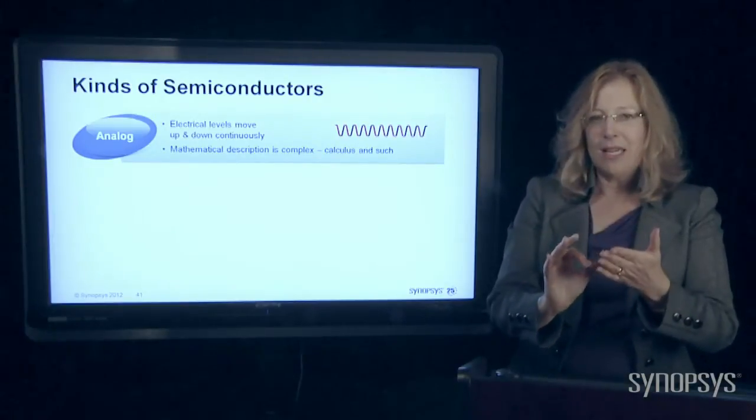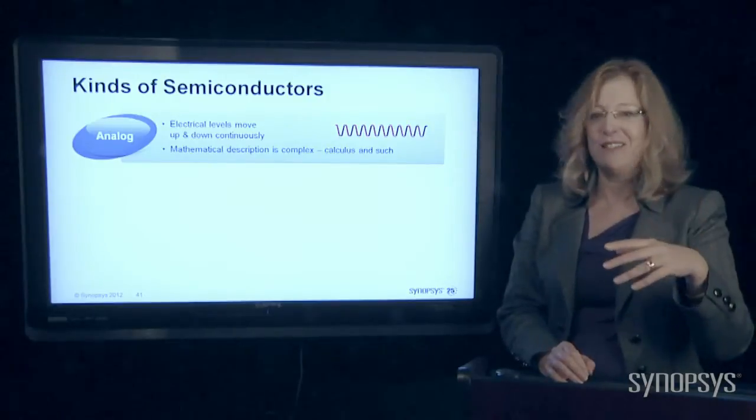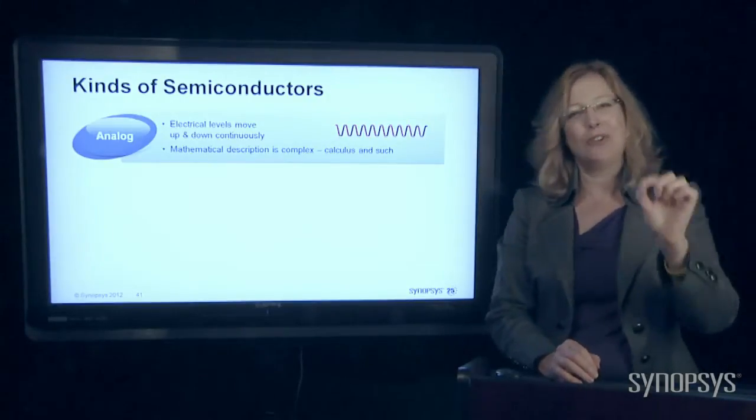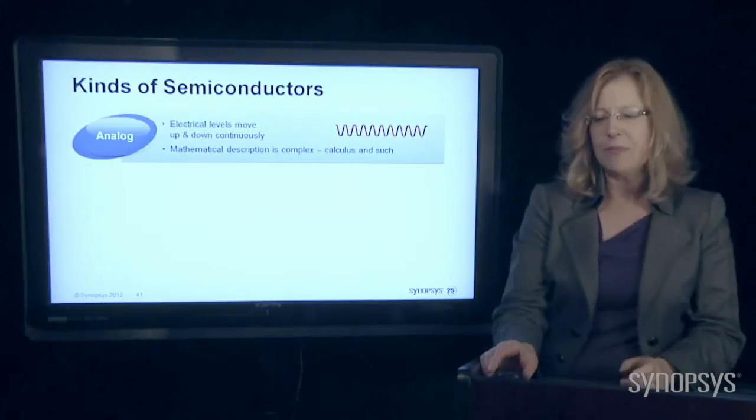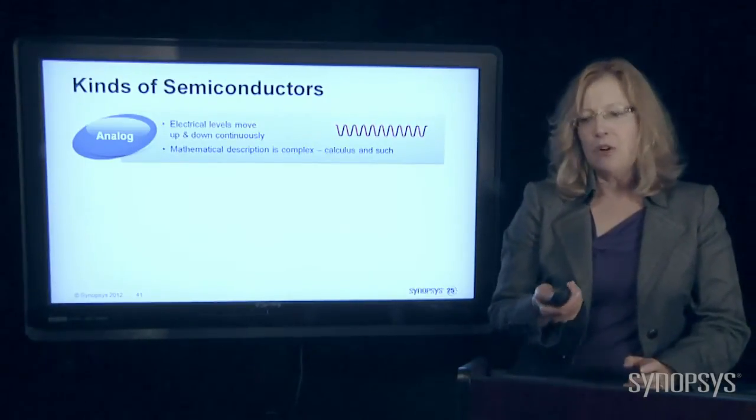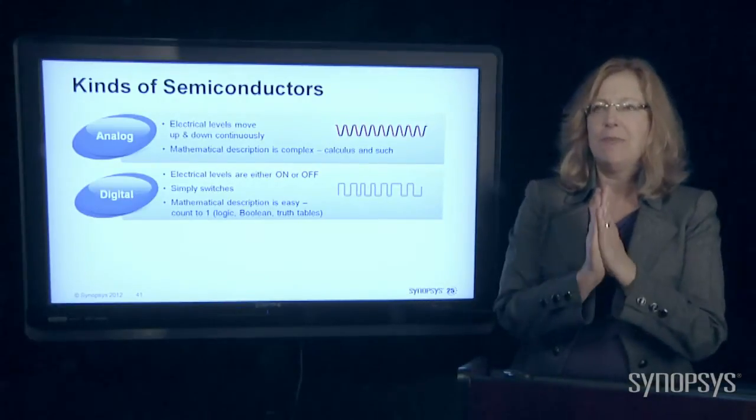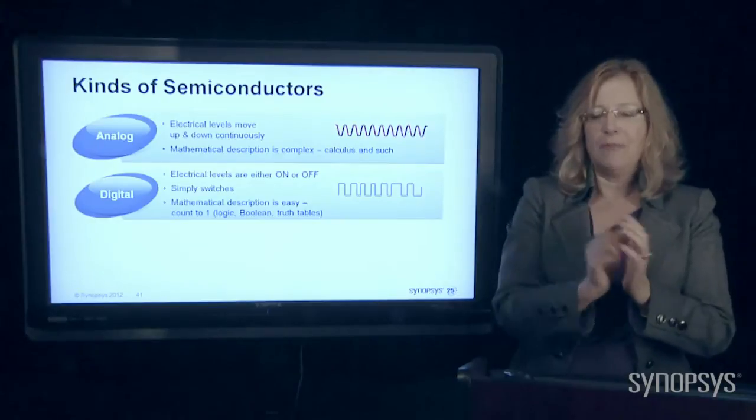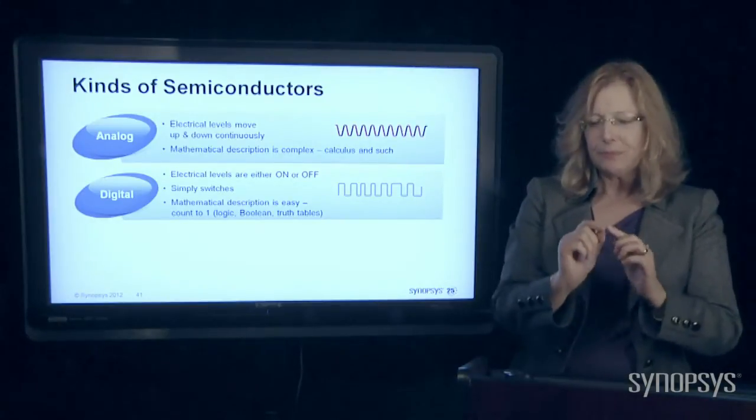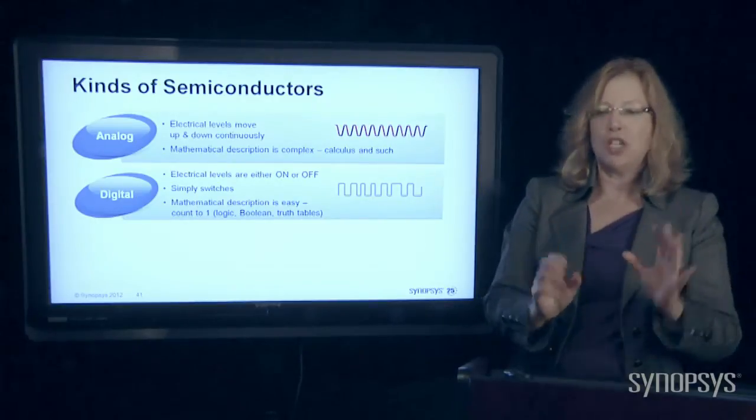Describing that mathematically is extremely complicated. We use calculus and all kinds of really scary things in order to describe that behavior of electricity going up and down in waves. So years ago, engineers said, you know what, let's pretend that the electricity is either on or off. And they called this digital.